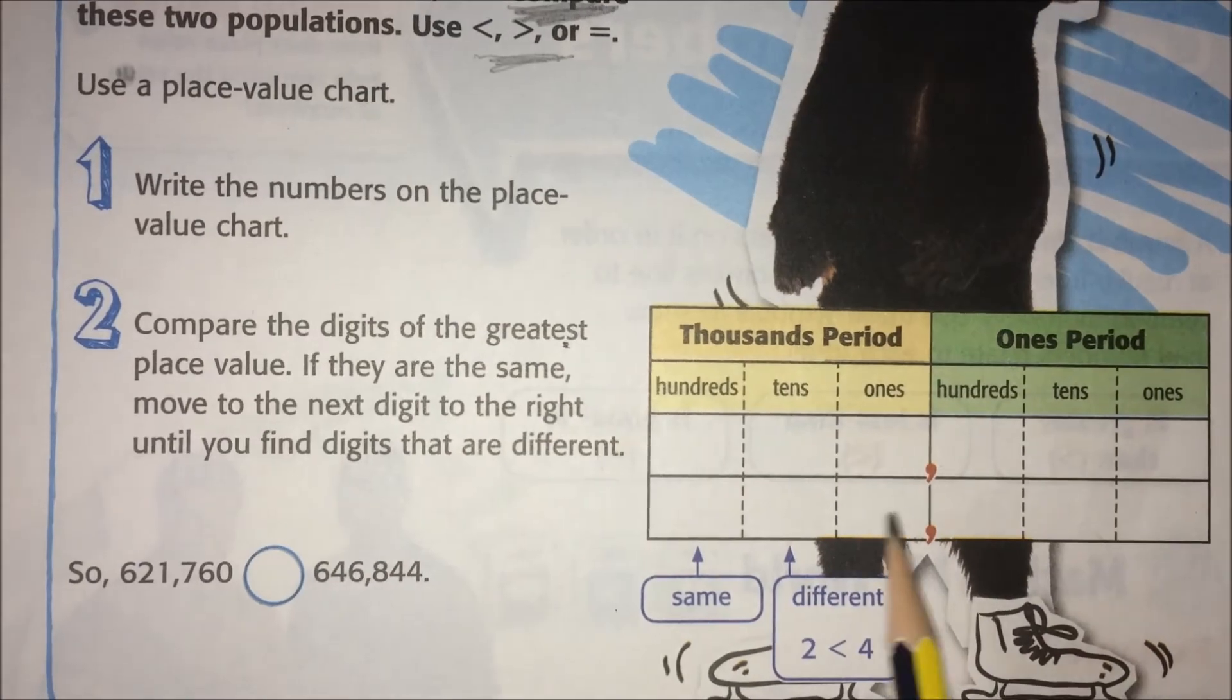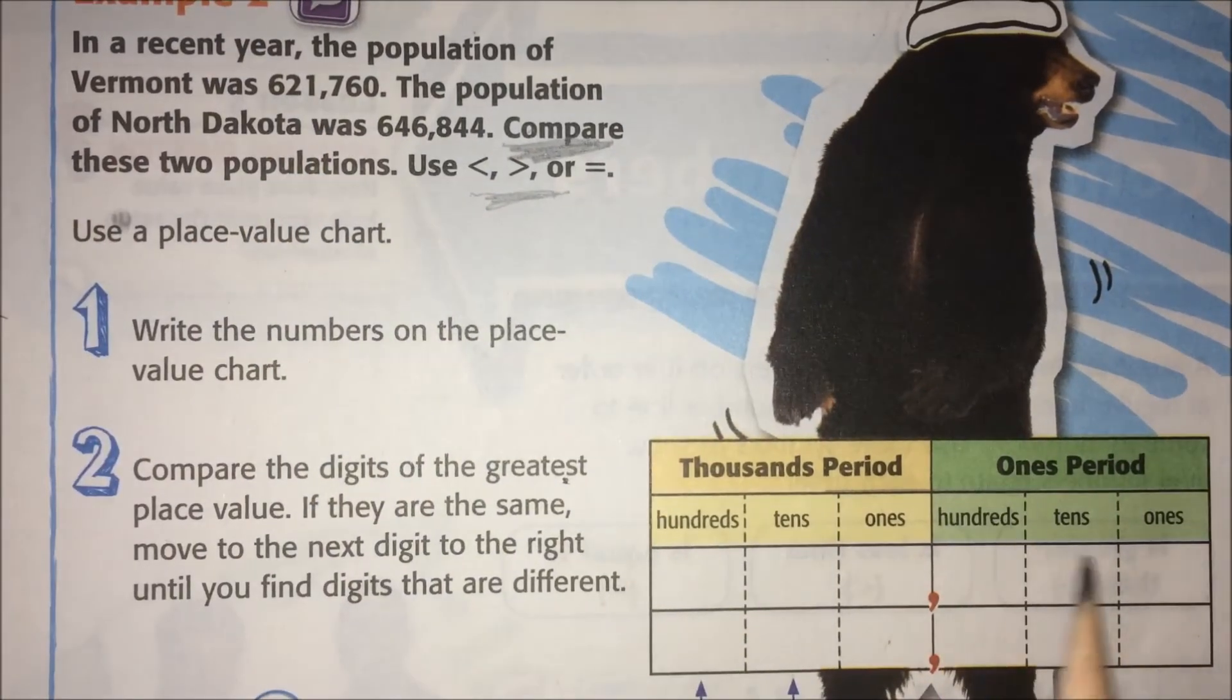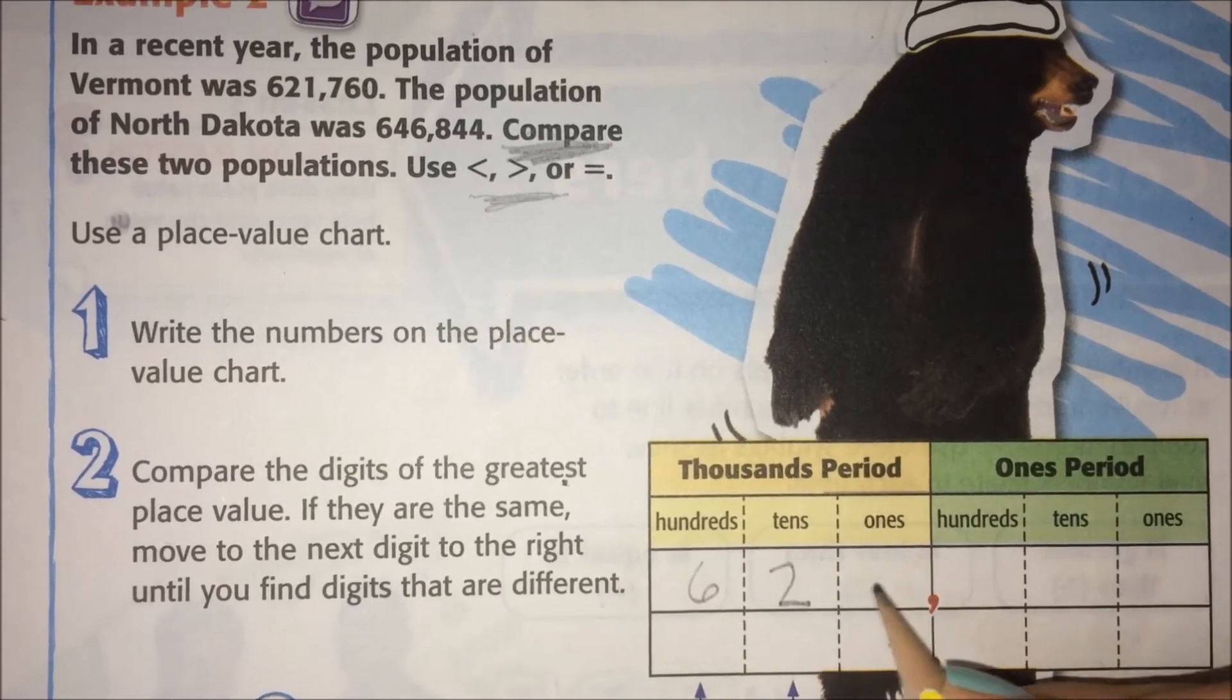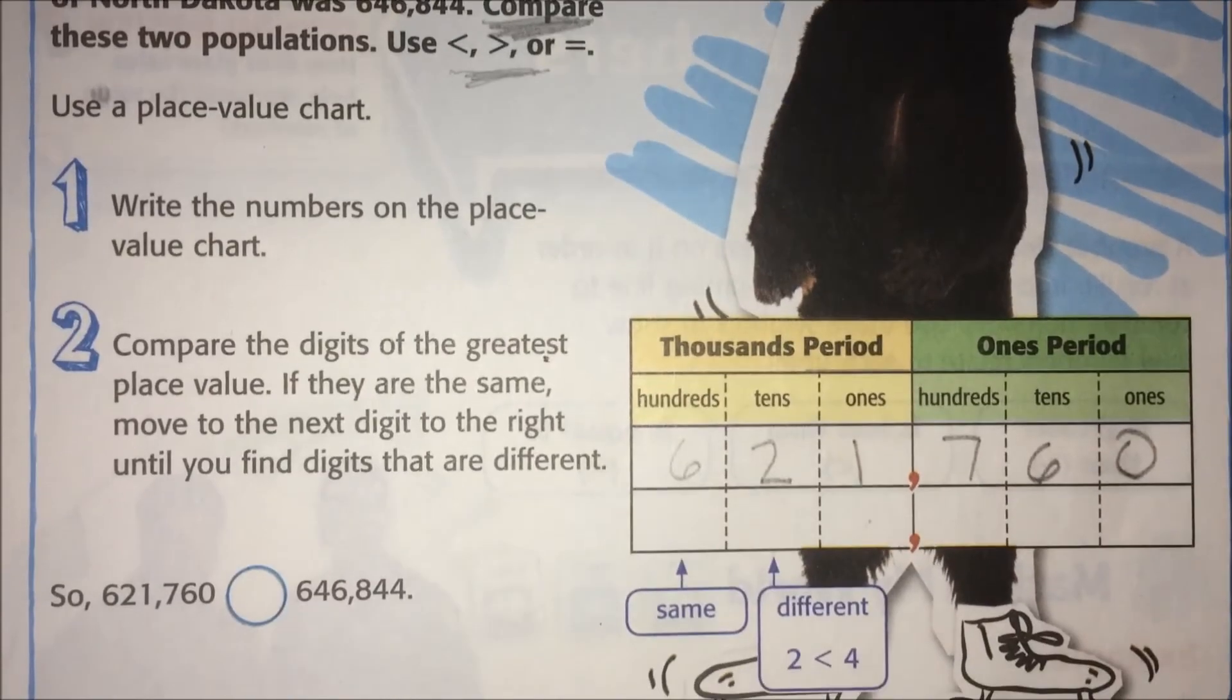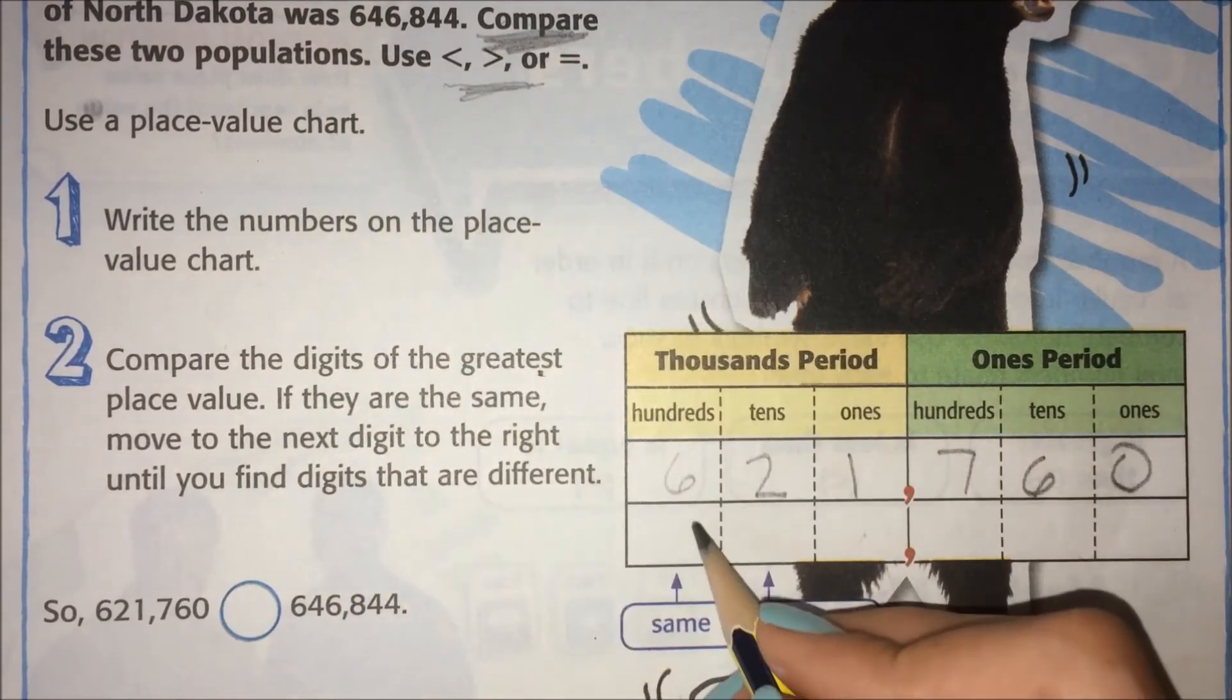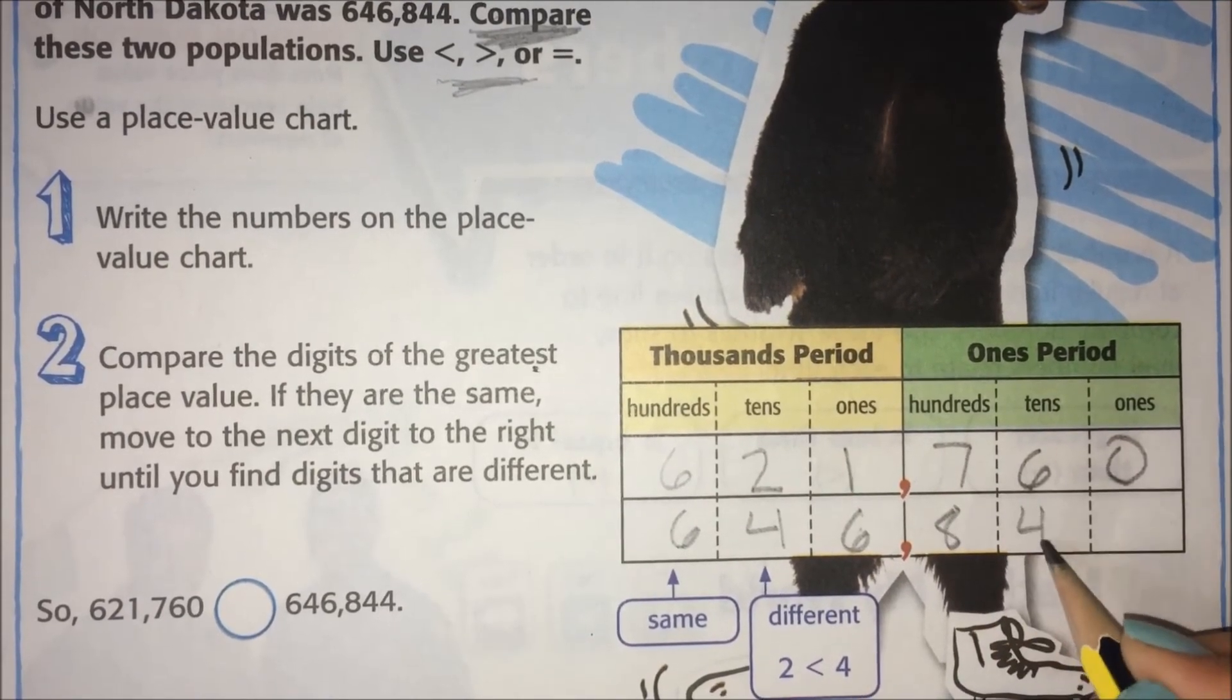Use a place value chart. Write the numbers on the place value chart. So, it doesn't matter which one we write first. I'm just going to write it in order as we saw it here. So, this first one was 621,760. And the second one was 646,844.